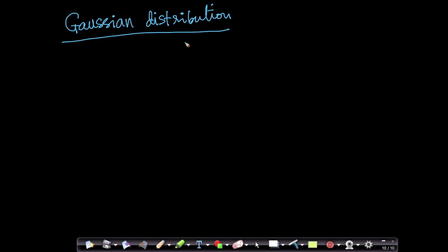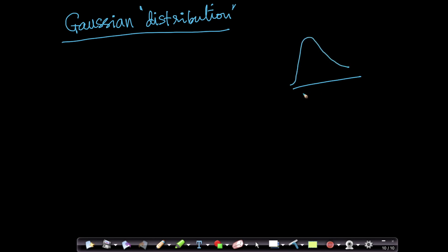One of the most important ideas in probability and statistics is the concept of a distribution. We will understand what a distribution is by picking up one of the most famous distributions called a Gaussian distribution. You might have come across a shape like this which looks like a bell-shaped curve. This is one of the most recognizable shapes in probability and statistics.